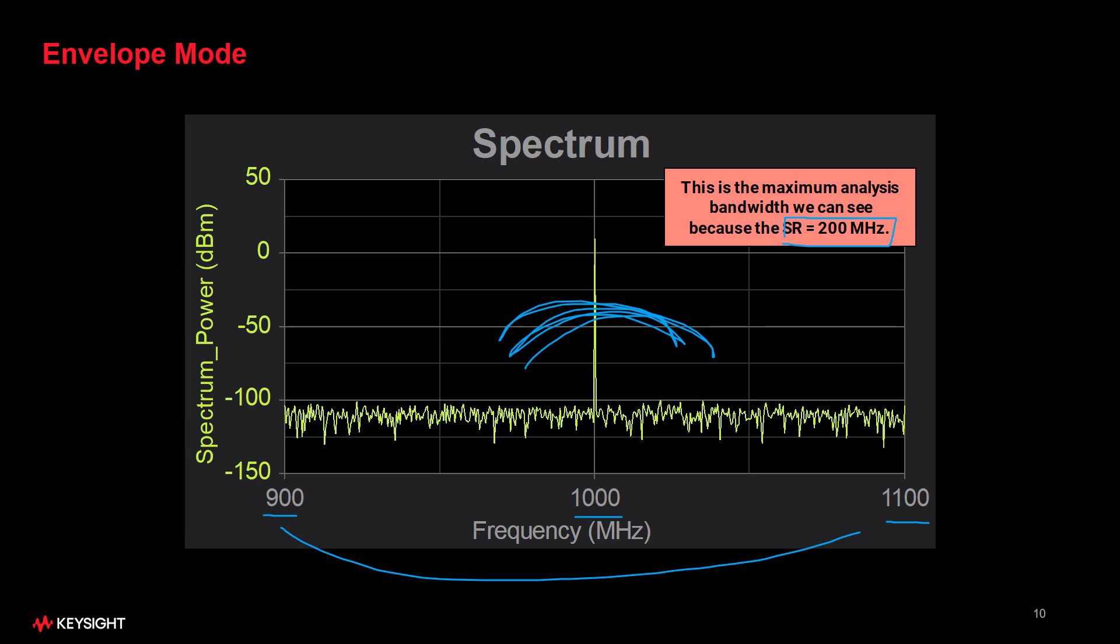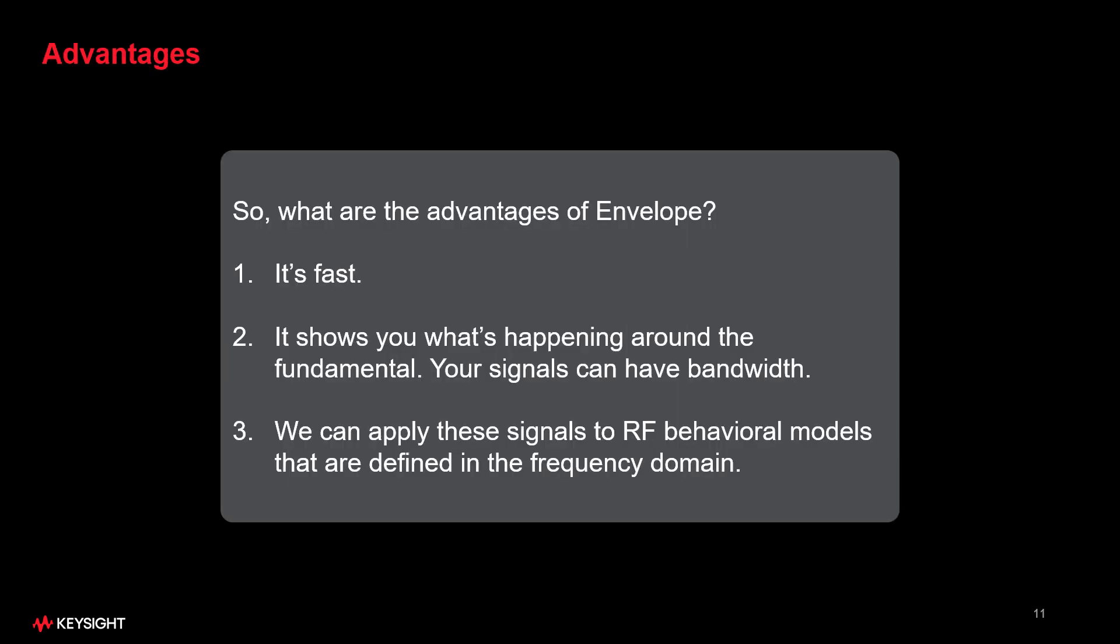This is for seeing what's happening around the fundamental for inspecting modulation, for making measurements like bit error rate and error vector magnitude, ACLR, or looking at the constellation, things of that nature. So, the whole reason for having this mode is because it's so fast, and it shows you what's happening around the fundamental. So, your signals can have bandwidth, as we will see in a moment.